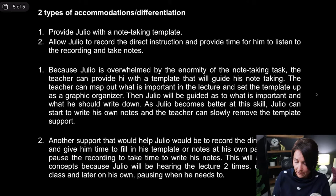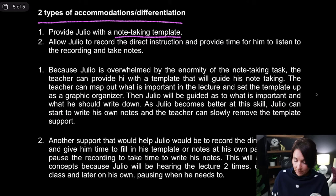Let me show you how I set this up. Two types of accommodations or differentiation. Number one: provide Julio with a note-taking template. This is something you could provide at the beginning of the year and gradually release him from it as he gets better at taking notes on his own. Number two: allow Julio to record the direct instruction and provide him time to listen to it and take notes. So those are the two accommodations.